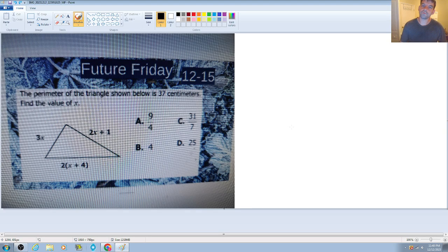Hey guys, hoping all is well with everyone. So in this question of the day, we have a combination of both an algebraic component and geometric component to our question. The question states that the perimeter of the triangle shown below is 37 centimeters. Find the value of x.